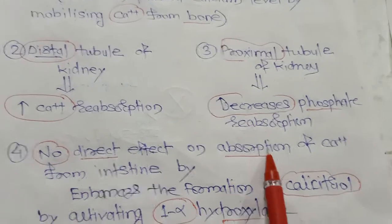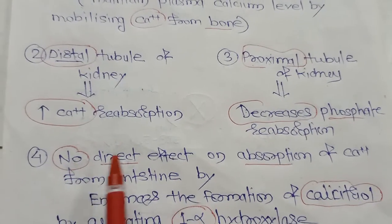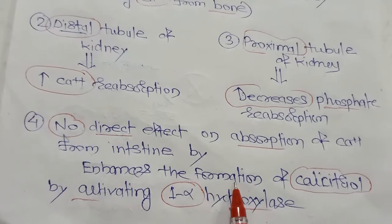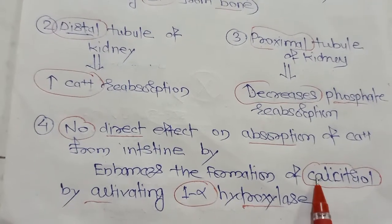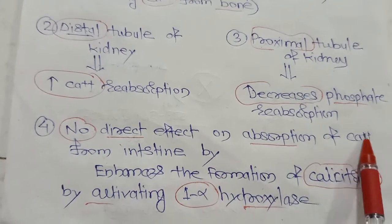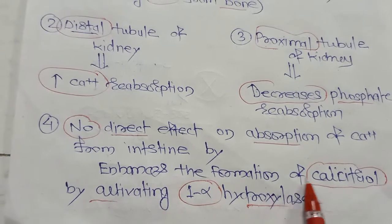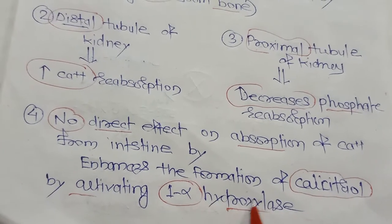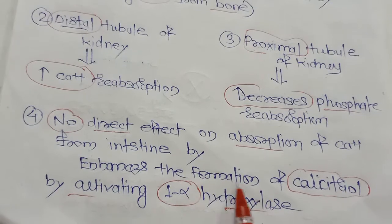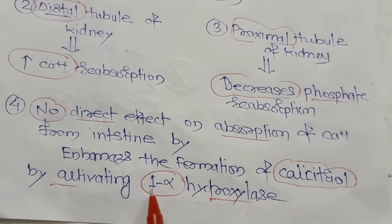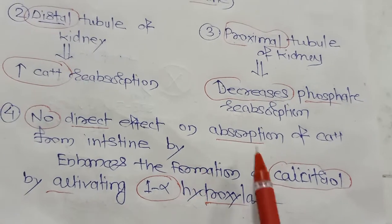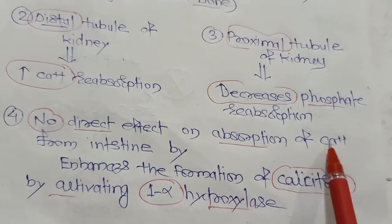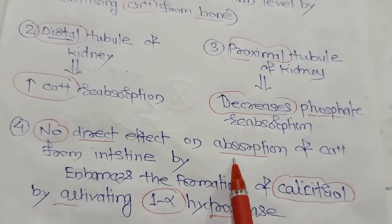There is no direct action of PTH on calcium absorption from the intestine. However, it enhances the formation of calcitriol by activating 1-alpha hydroxylase. Since calcitriol is the active form of vitamin D, this indirectly increases calcium absorption from the intestine.